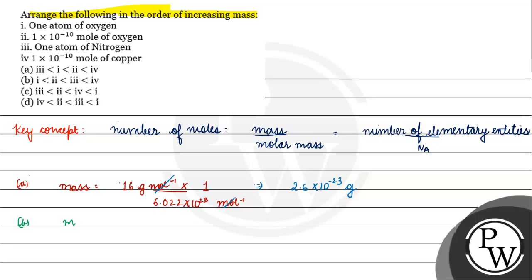Next, for 1×10⁻¹⁰ moles of oxygen, we have 10⁻¹⁰ moles. The atomic mass is 16 g/mol, so the mass will be 16×10⁻¹⁰ grams.